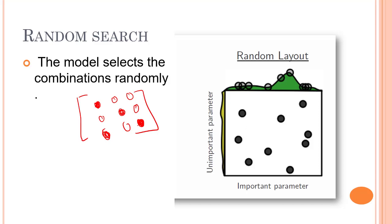Now that we've covered random search, grid search, and why we need hyperparameter tuning, let's look into a hands-on view of how to execute random search and grid search. We will also compare our initial values to the results we get after applying grid search or random search. Let's jump into the next video.